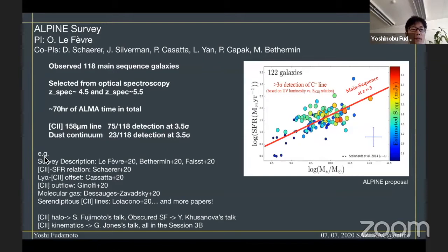As you may know, the results from ALPINE survey have already been published and several projects are still ongoing. If you are interested, please look at these individual papers. For tomorrow's session, Seiji Fujimoto will talk about C-plus halo studies, Yanaku Sanoba will talk about obscured star formation rate density, and Guyce Jones will talk about C-plus kinematics.